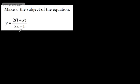What we need to do here is multiply both sides of the equation by the denominator. So I'm going to have y multiplied by the quantity (3x - 1) equal to, and I'm just going to expand the brackets right here, 2 + 2x.